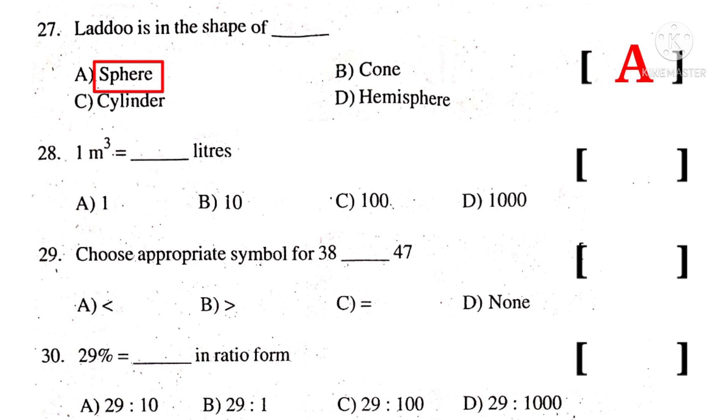28. One meter cubed is equal to dash liters. 1000 liters. So the correct choice is D.